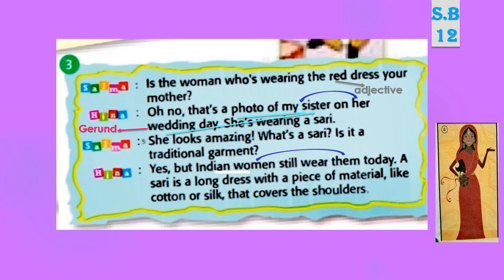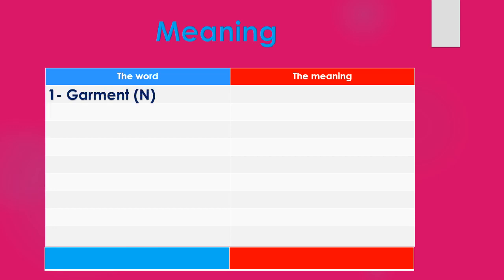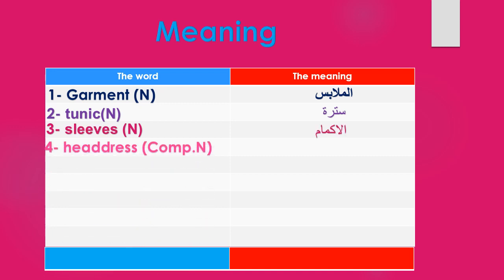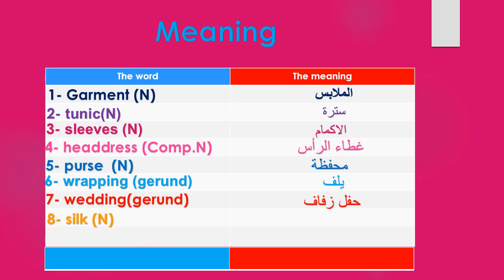Now let's go through the vocabulary. Number 1: garment — الملابس. Number 2: tunic — سترة. Number 3: sleeves — الأكمام. Number 4: headdress — غطاء الرأس. Number 5: purse — محفظة. Number 6: wrapping — يلف. Number 7: wedding — حفل زفاف. Number 8: silk — حرير. Number 9: cover — غطاء. Number 10: shoulders — الأكتاف. You have to write these down in your notebook.